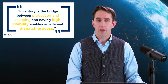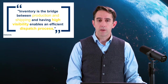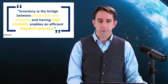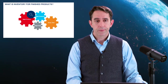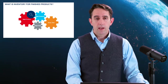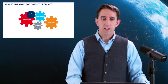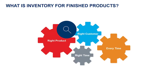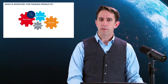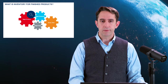How then do we enable this? If we review our theme here — the right product to the right customer at the right time every time — where does inventory fit into this puzzle?